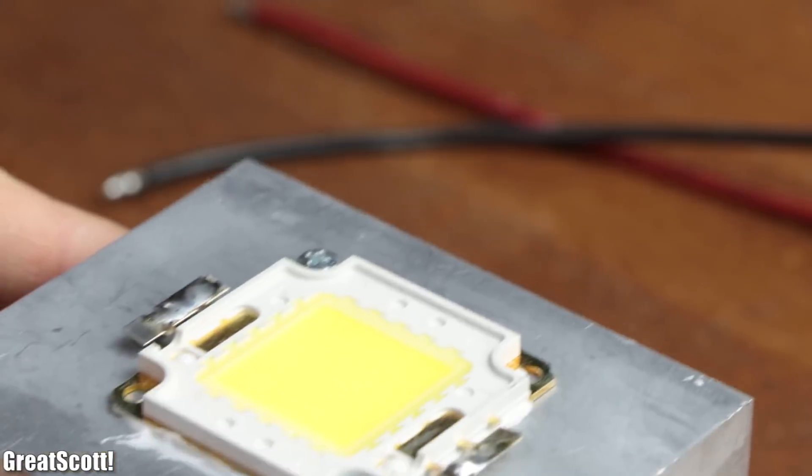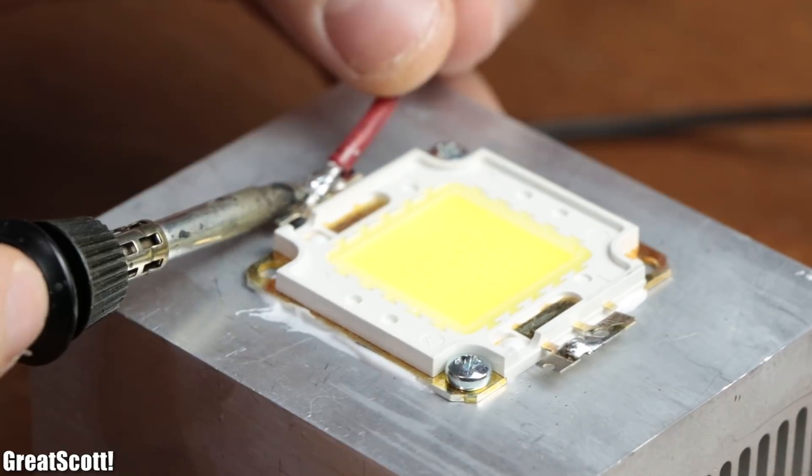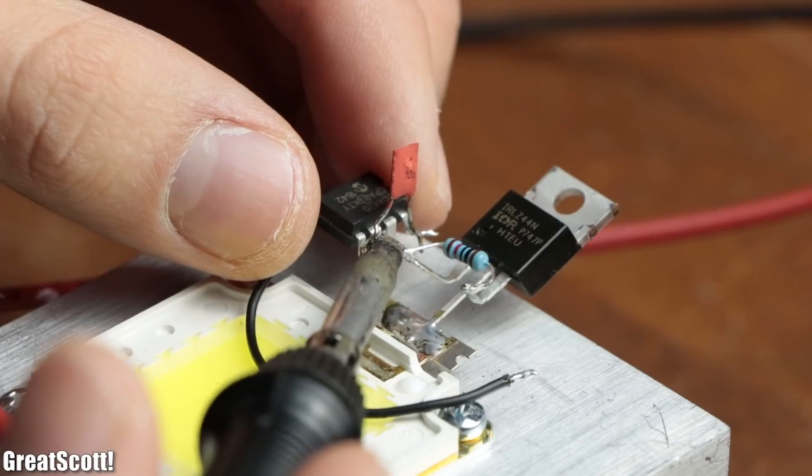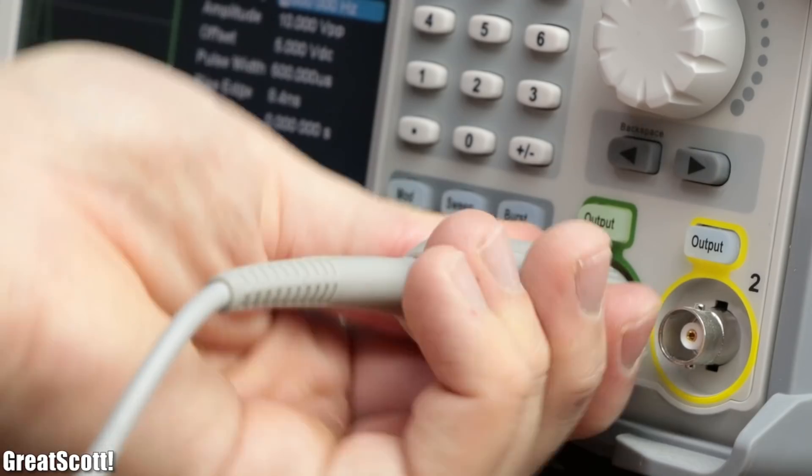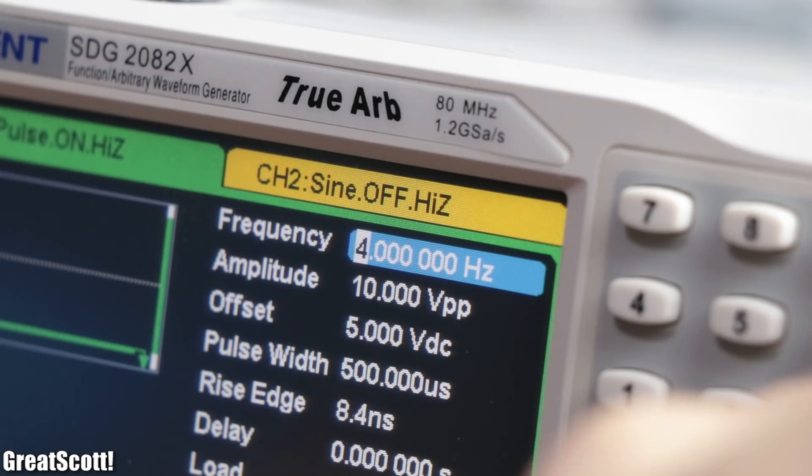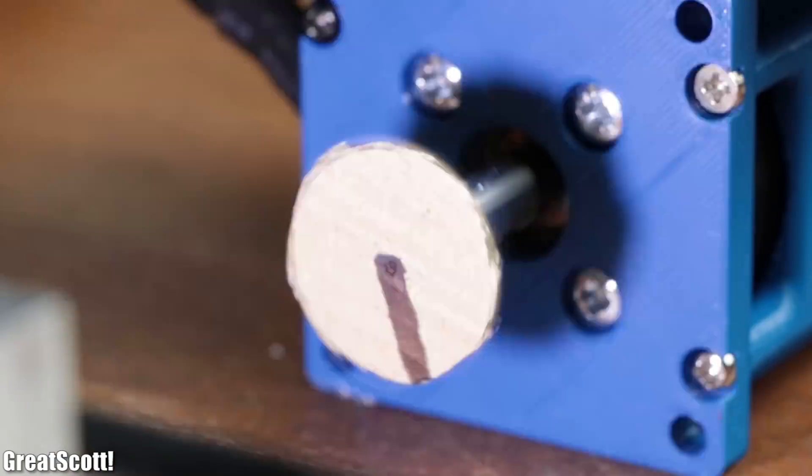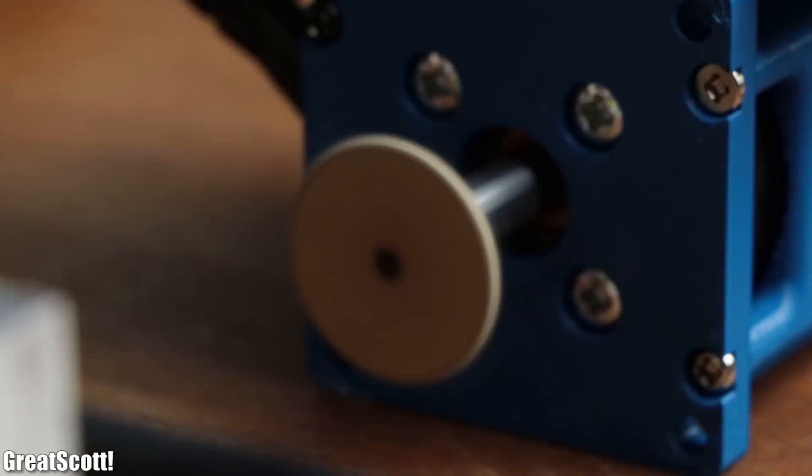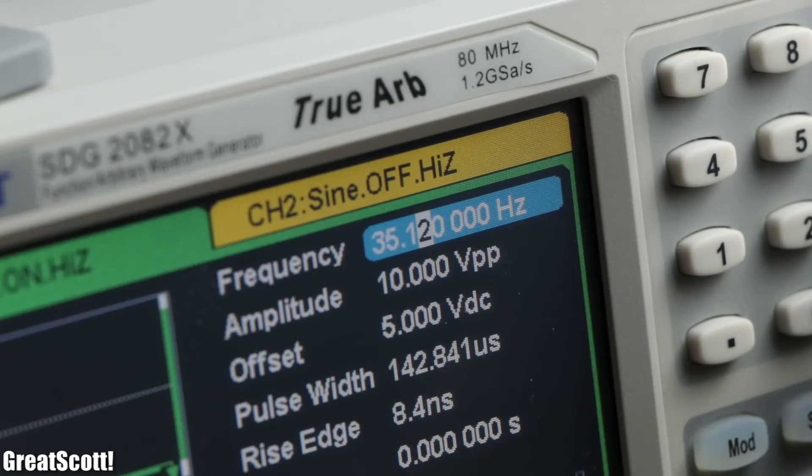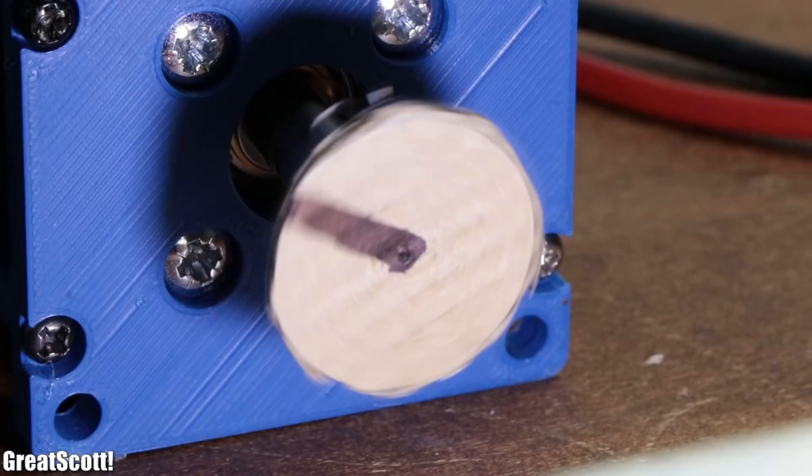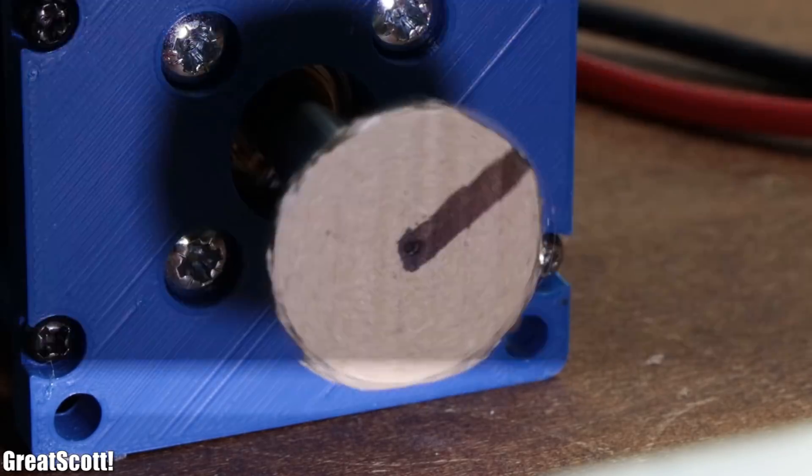But if we now create a stroboscope light out of a high power LED, a MOSFET with suitable driver and a function generator, and slowly increase the pulse frequency of these stroboscope lights, then the disc would slowly start to look a bit strange. And at a pulse frequency of 35.13 Hz, it looks like the marking of the disc is frozen in time.